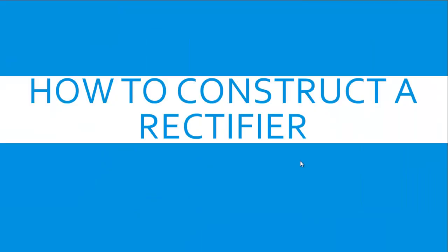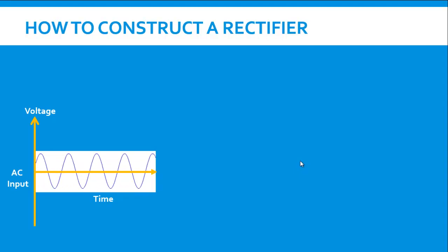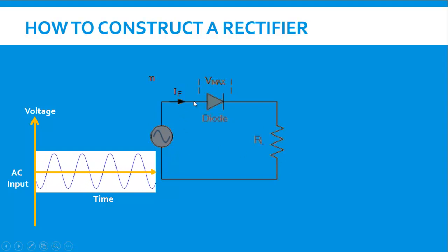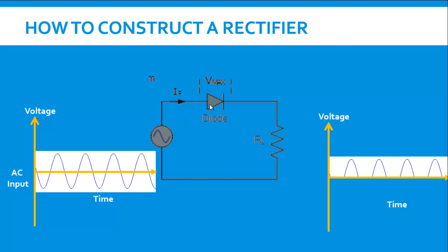Now the question comes how do we construct a rectifier? In order to construct a rectifier we take the AC voltage as input which is symbolized by this particular symbol and we connect a load across it and simply connect a diode. Now what is the property of diode that it only conducts the current when it is forward biased. So when we connect a diode to a circuit like this the output is a pulsating DC.